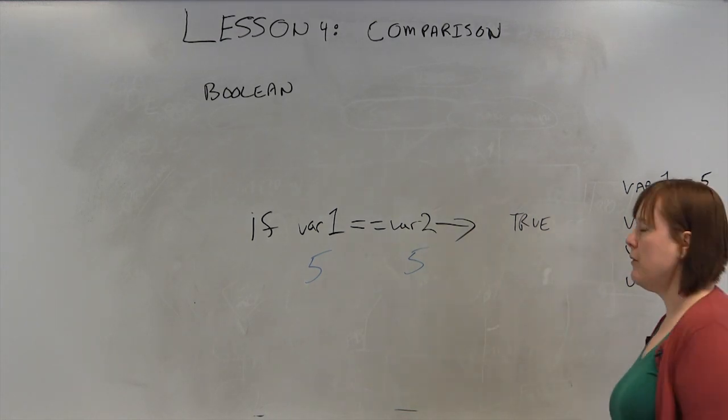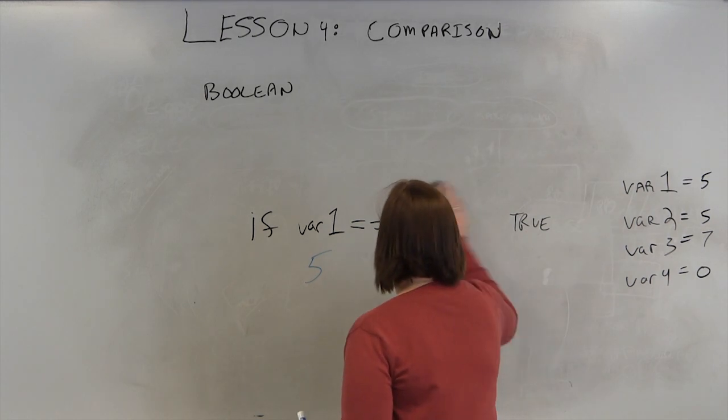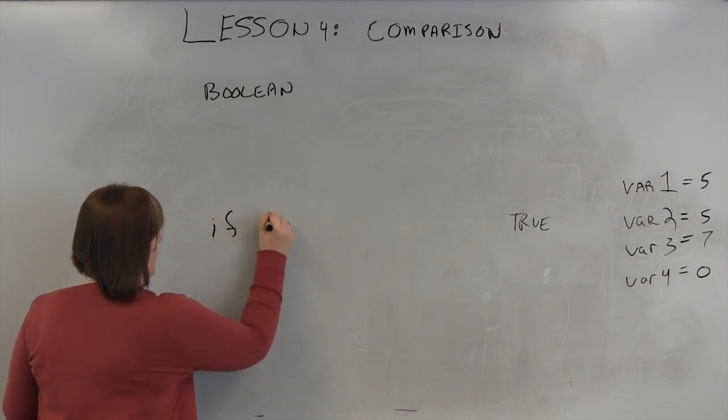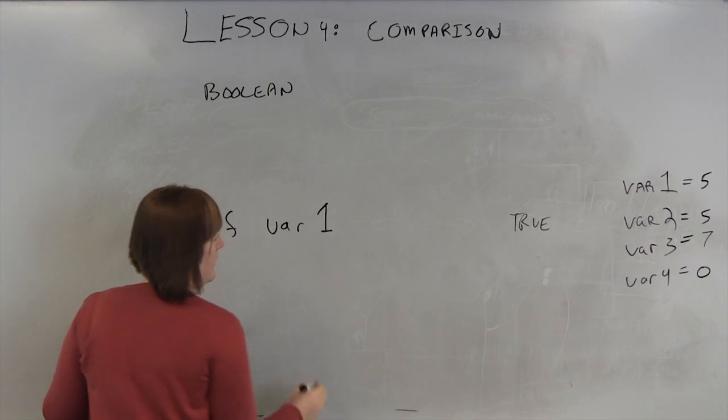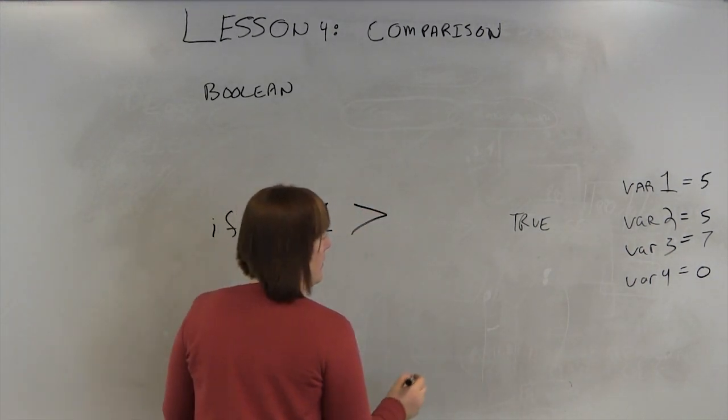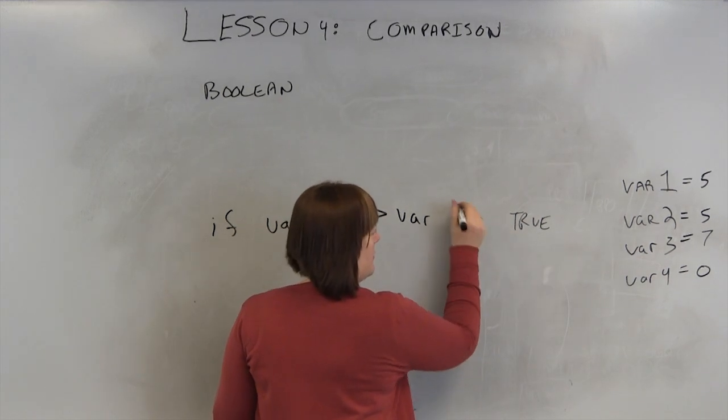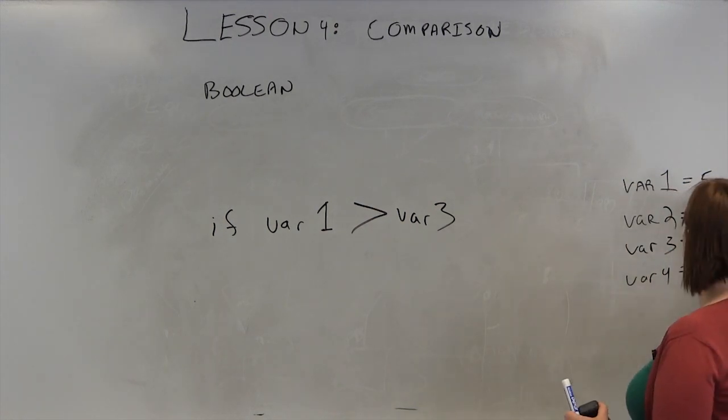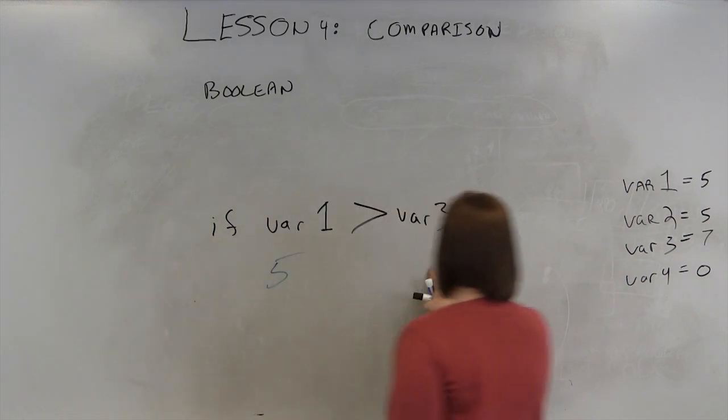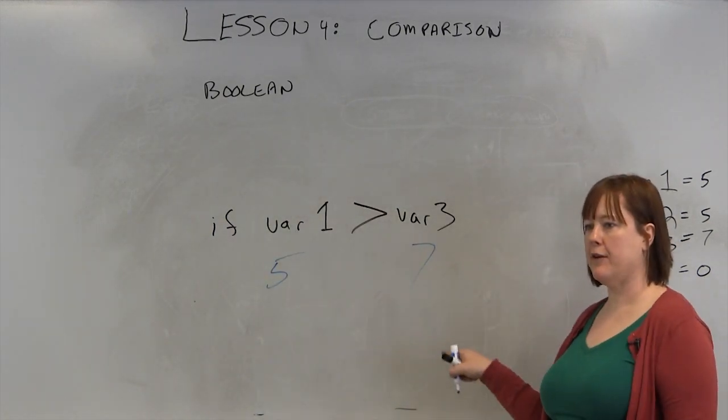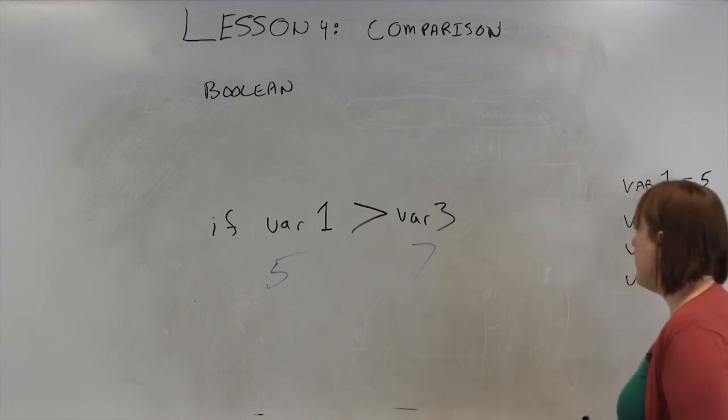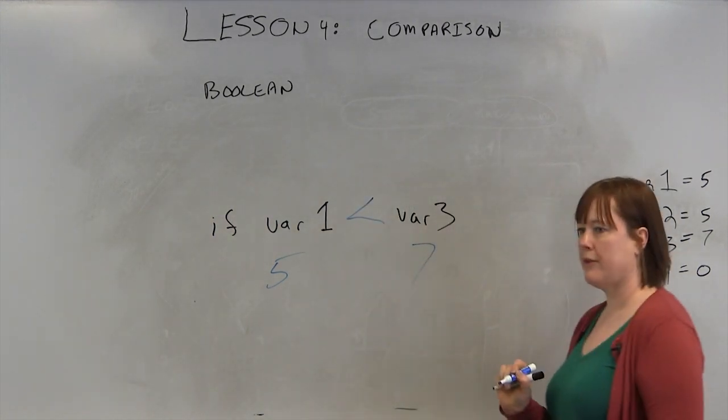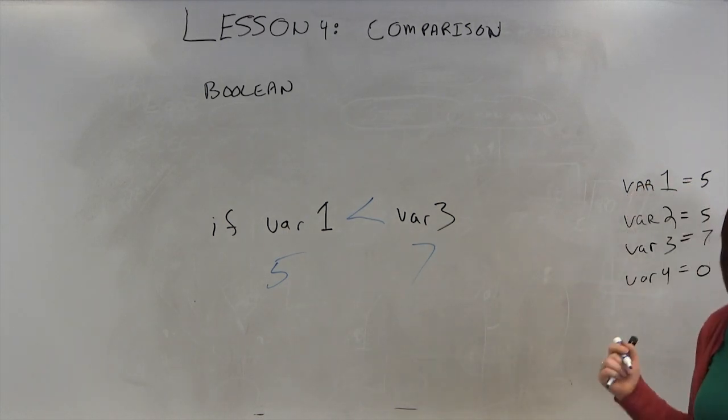So you might check to see if something's equal. That's common. You may also check to see if something is, let's write this a little bit bigger. Here, we might do if variable 1 is greater than variable 3. So again, to evaluate if this is true or false, variable 1 is 5. Variable 3 is 7. Is 5 greater than 7? No. It's false. So that equation would evaluate false. If we flipped it and said is variable 1 less than variable 3, that would be true. So you'll often use a greater than, a less than.